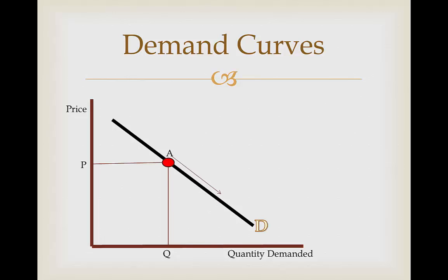We can also show changes in demand based on the price. We can label point B and show that if the price decreases, quantity demanded is likely to increase from Q to Q1, following a change in price from P to P1.